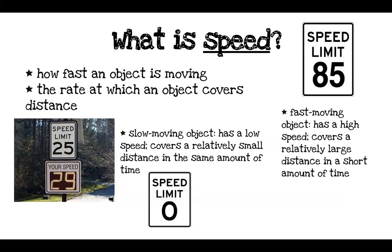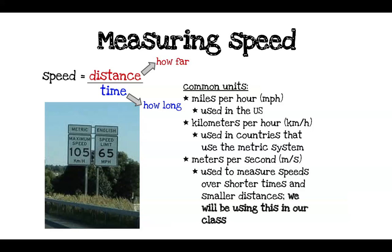How about a car that's not moving? Any non-moving object has a zero speed. The formula for speed is distance divided by time — how far an object travels divided by how long it takes to get there.